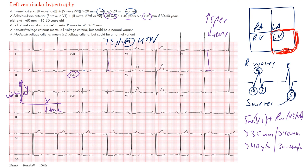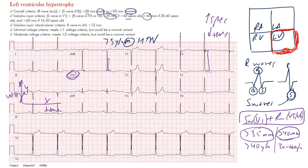To review: the Cornell criteria looks at the AVL R wave plus the S wave in V3 — greater than 28 mm in men, greater than 20 mm in women. The Sokolow-Lyon looks at S wave in V1 plus R wave in V5 or V6 — greater than 35 mm for patients over 40, greater than 40 mm for those between 30 and 40. The Sokolow-Lyon standalone looks at AVL R wave greater than 12 mm. These all have high specificity around 90% but low sensitivity, meaning many patients are being missed.